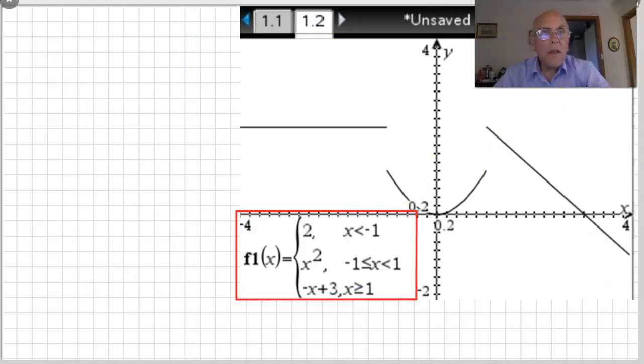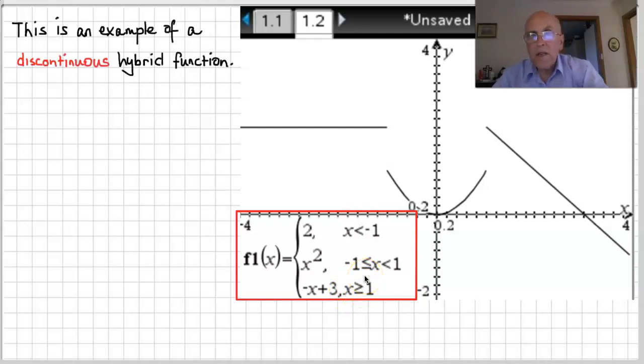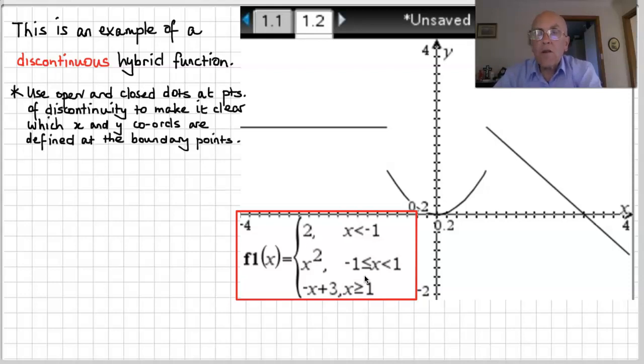Now, this one here is an example of a discontinuous hybrid or piecewise function. So we've got y equals 2 where x is less than minus 1, it's equal to x squared where x is greater than or equal to minus 1 but at the same time less than plus 1, and it's minus x plus 3 for x greater than or equal to 1. Use open and closed dots at the points of discontinuity to make it clear which x and y coordinates are defined at the boundary points.